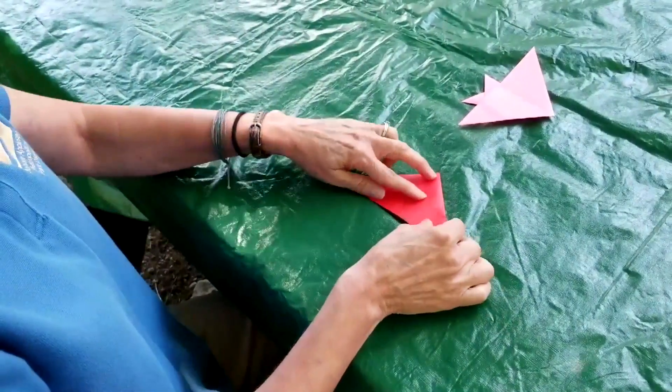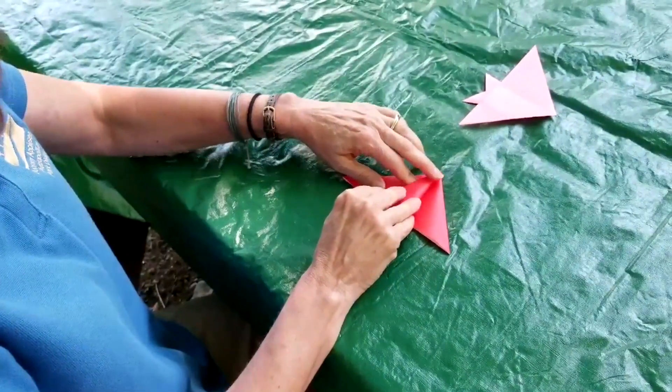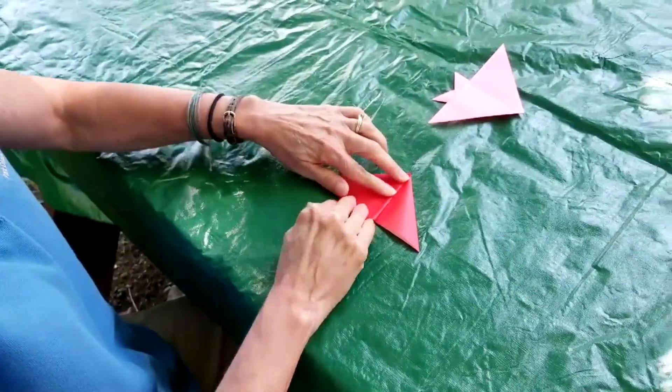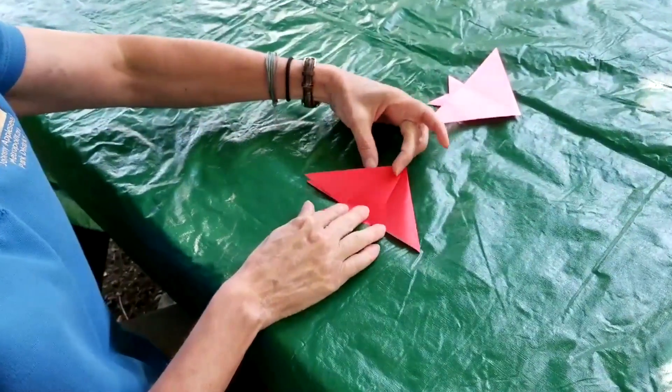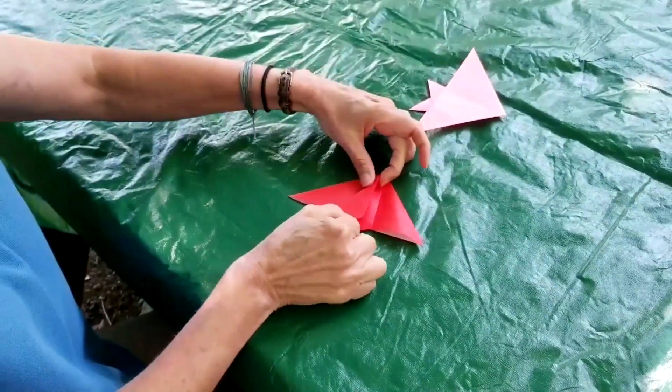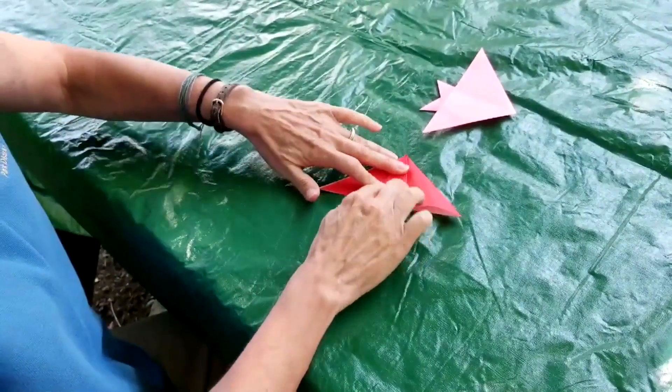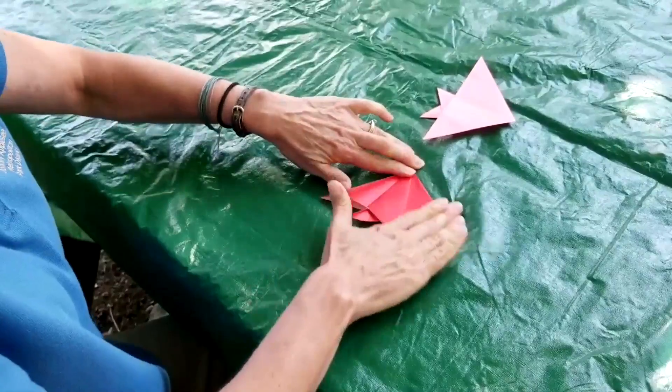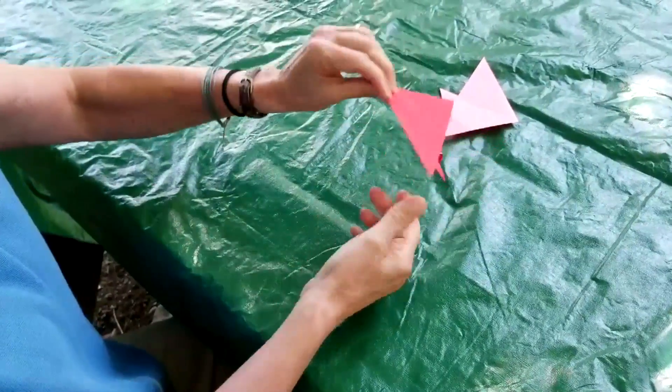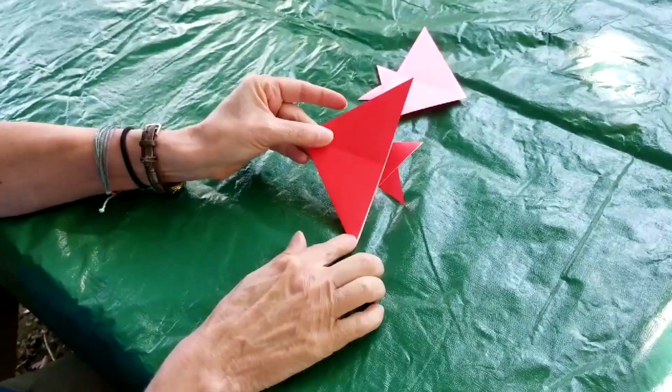Take one of the edges, fold it down, and then take the other edge and fold that over. And you now have our first origami fish.